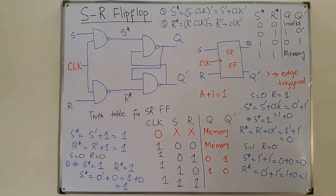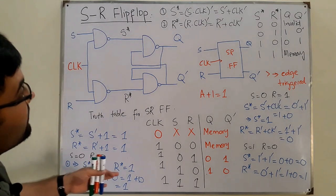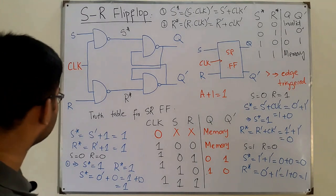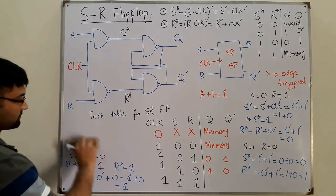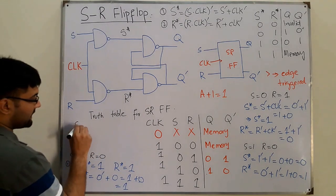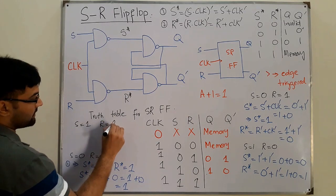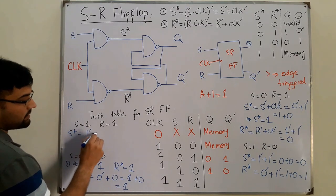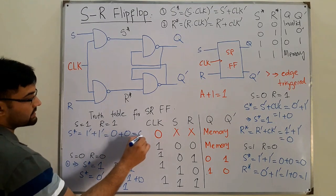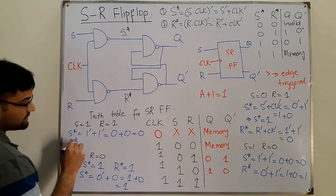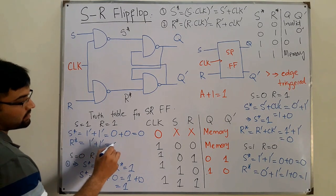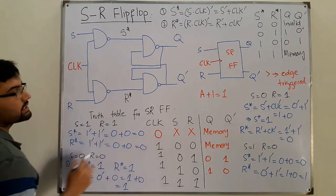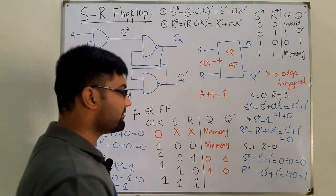Finally, when S=1 and R=1: from equation 1, S* = S̄ OR CLK̄ = 0 OR 0 = 0. From equation 2, R* = R̄ OR CLK̄ = 0 OR 0 = 0. So we have S*=0 and R*=0, which is the invalid state for the SR flip-flop.